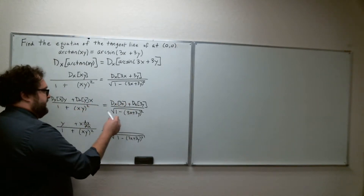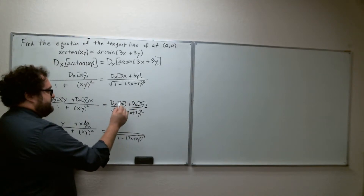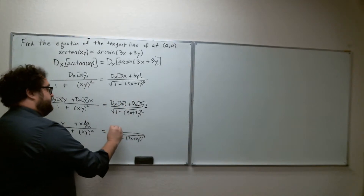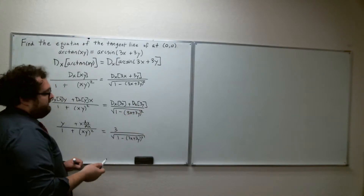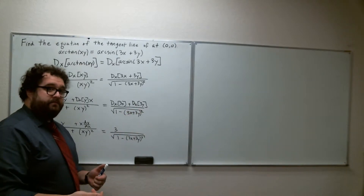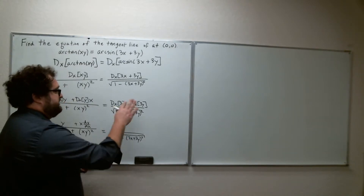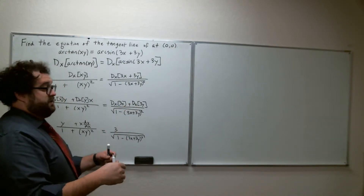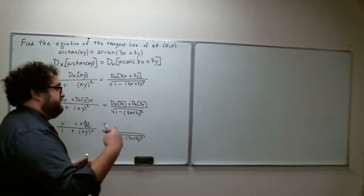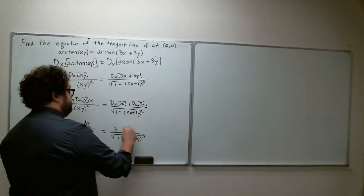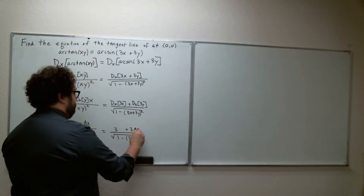The derivative of 3x with respect to x is just 3 — business as usual. But for the derivative of 3y with respect to x: if it were just 3x the derivative would be 3, and that's still the case with 3y, except we have to add a dy/dx factor. So it's plus 3 dy/dx. With implicit differentiation, whenever you differentiate a function that's not a function of x, you multiply by dy/dx — that's the chain rule operating in the background.